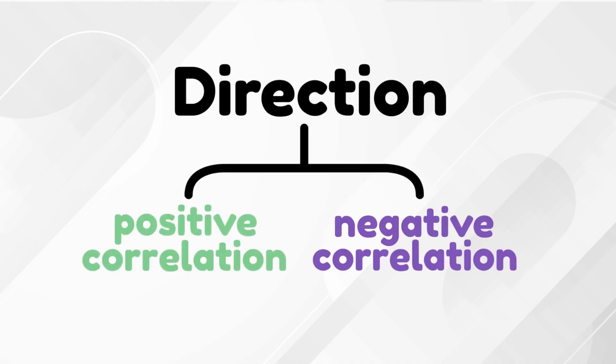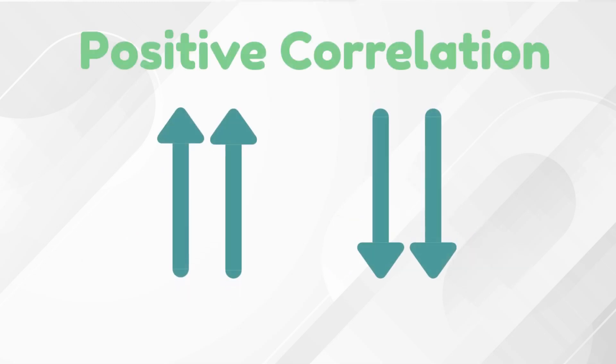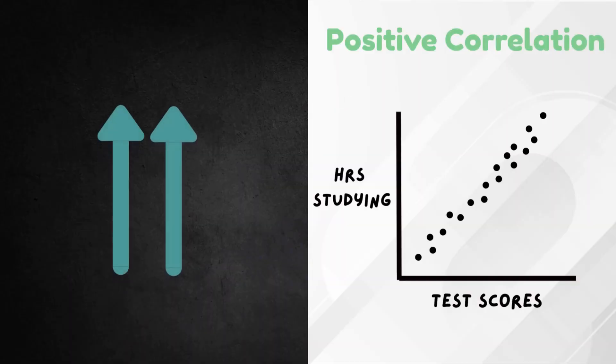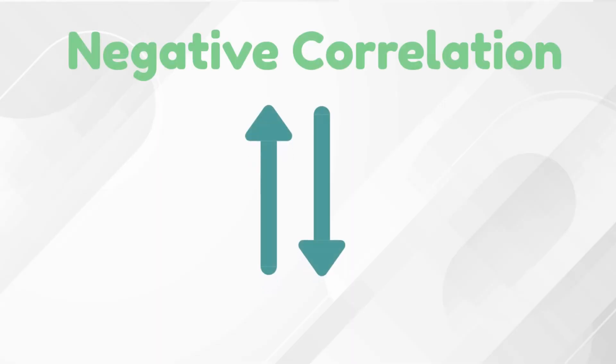When it comes to direction, correlation can be either positive or negative. A positive correlation means that both variables move in the same direction — as one goes up, so does the other. For example, the more time you spend studying, the higher test scores tend to be; the more hours of sleep you get, the better your mood tends to be. In contrast, a negative correlation means the variables move in opposite directions: as one variable goes up, the other goes down.